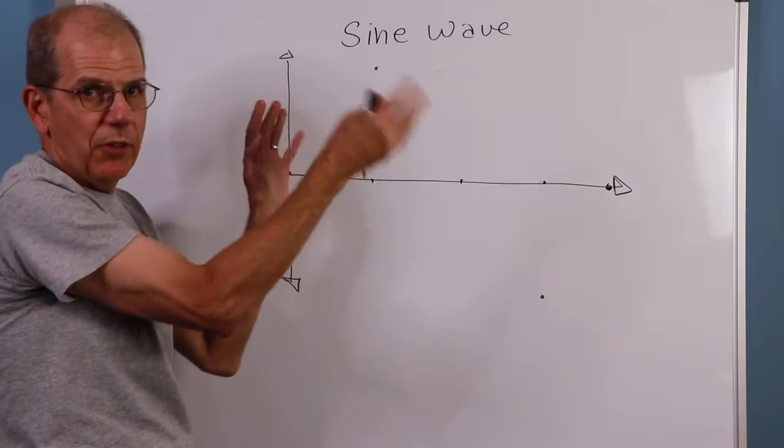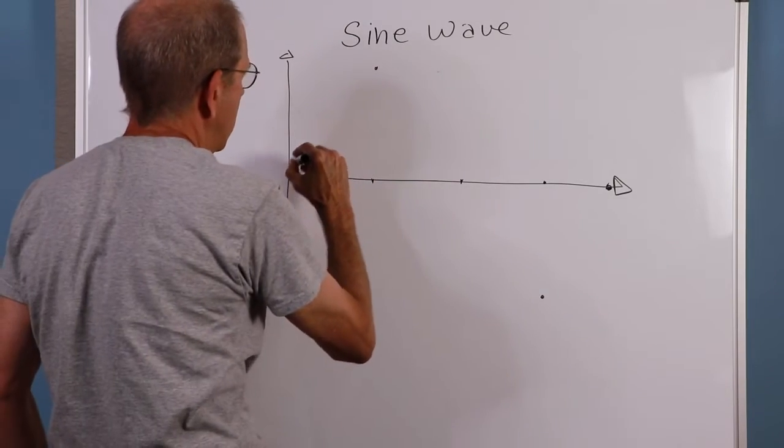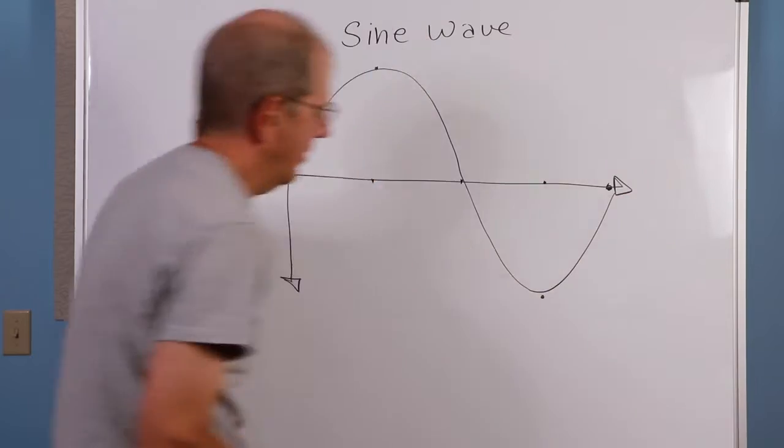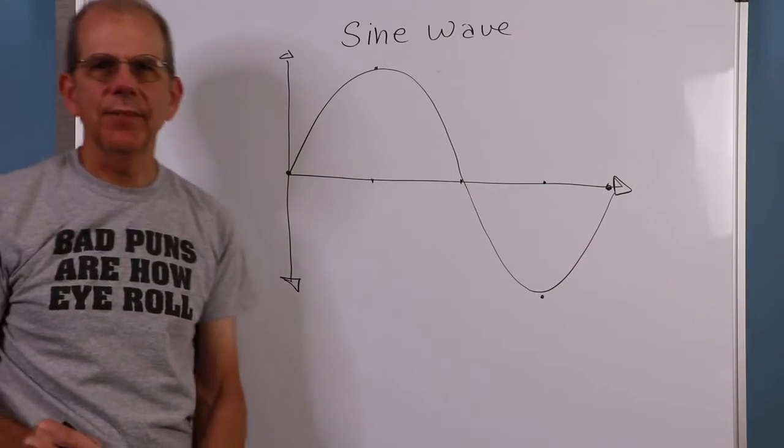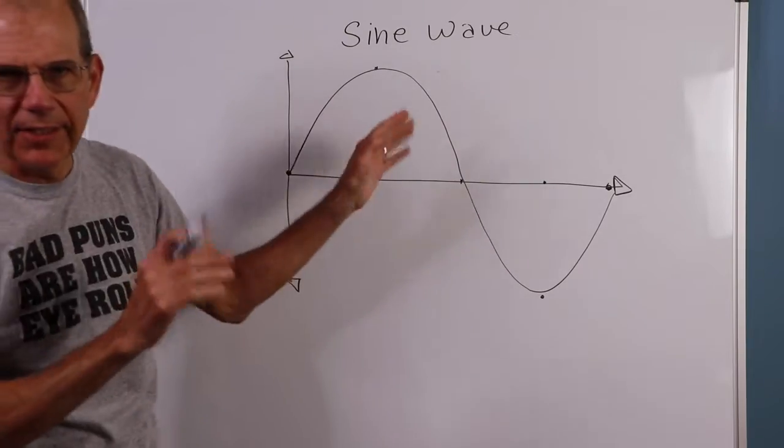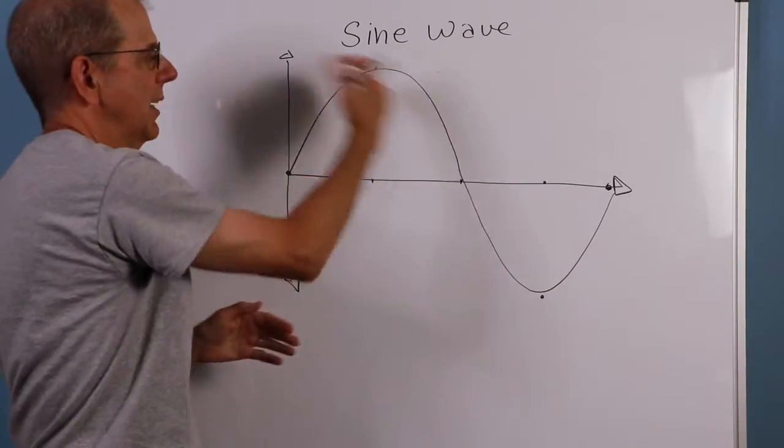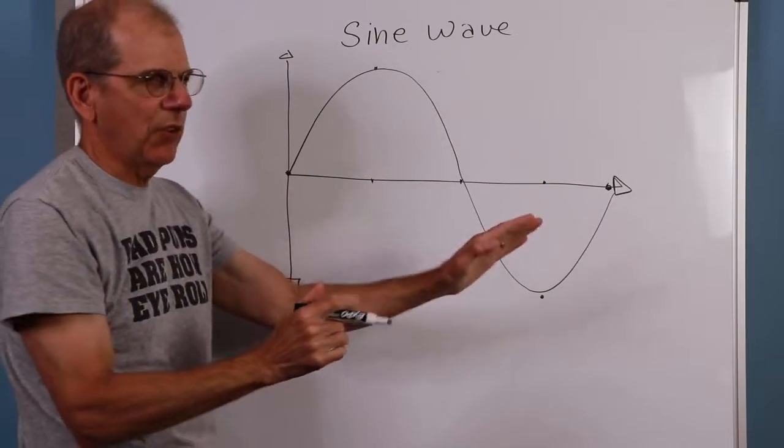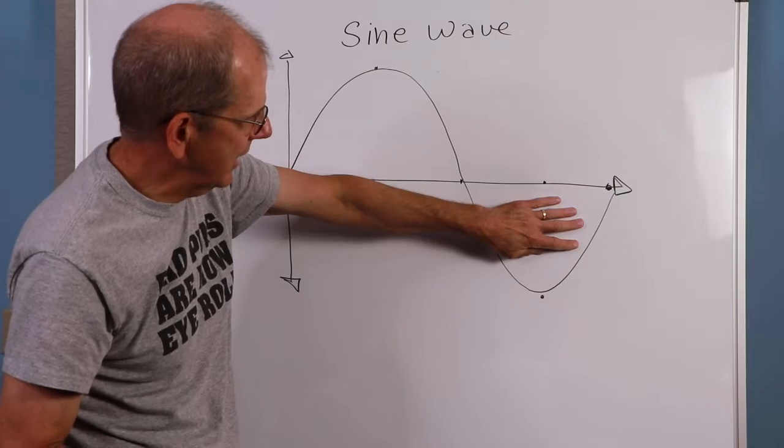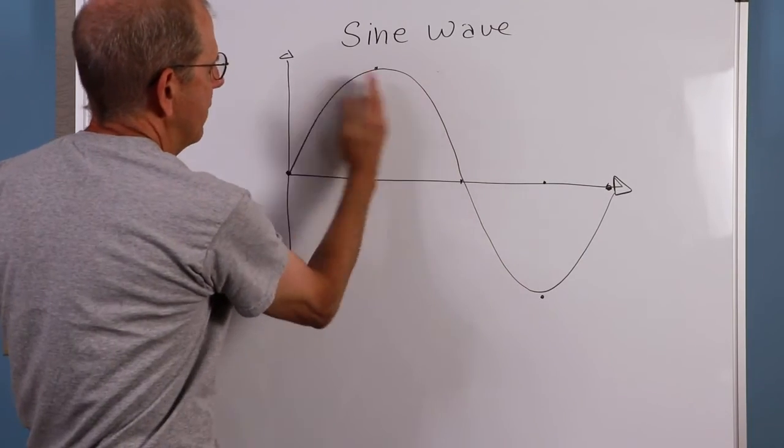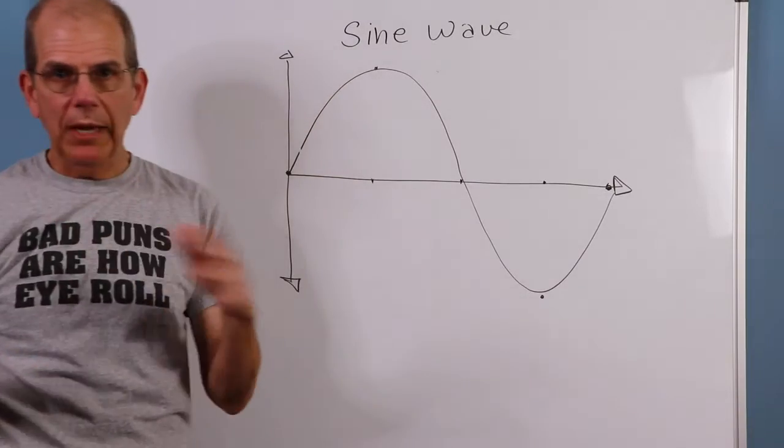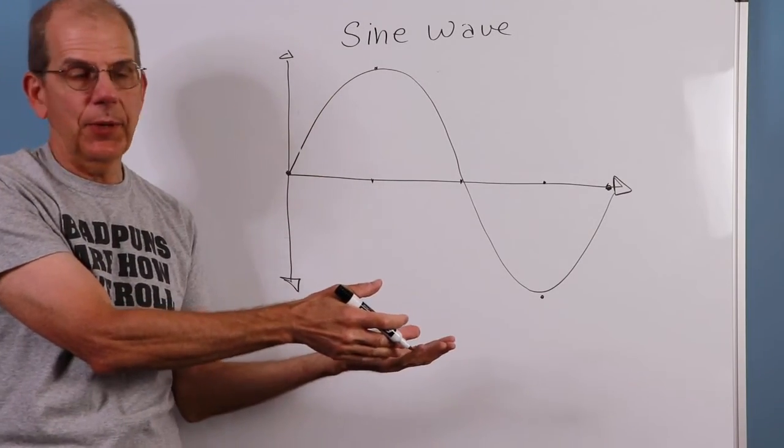And of course, in between are all these other points that we were measuring. You connect the dots and you get something that looks like that. So that's my sort of simplified little sine wave. Less than ideal drawing, but you get the basic idea. This thing is supposed to be perfectly symmetrical. This half, if you flip it down, should look just like this. And this half, if you flip it over, should look just like this. But that's the sine wave. And all waves are built on this.